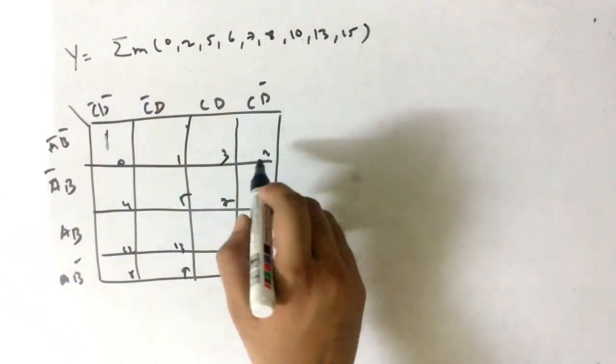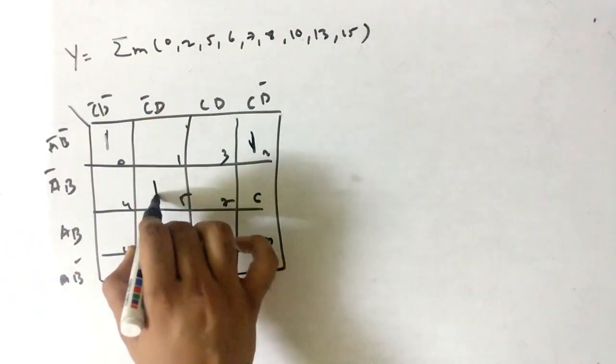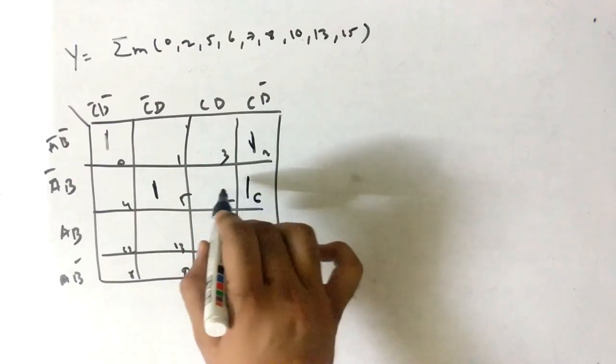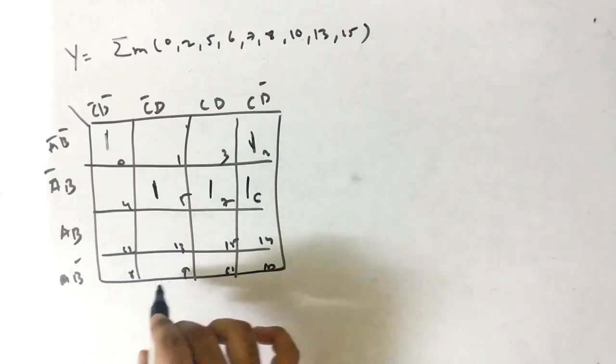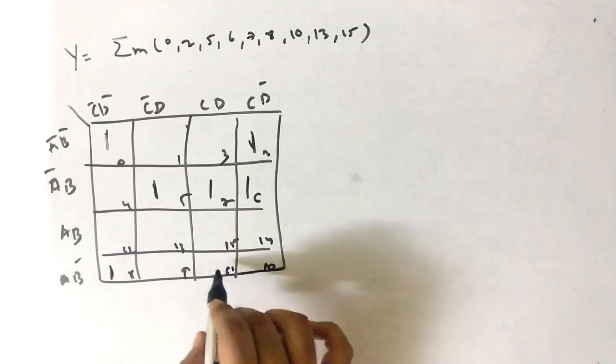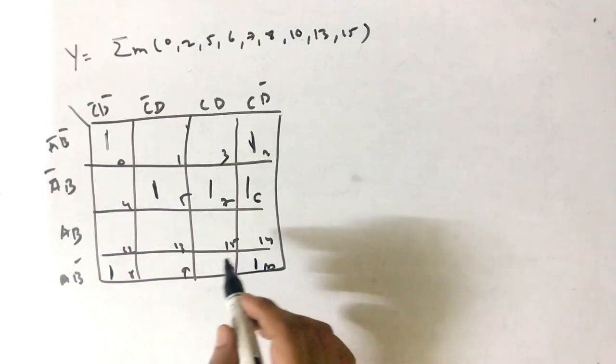Put 1 for the respective decimal. For 0 the output is high, similarly for 2 the output is high, then for 5, 6, 7, 8, 10, 13, and 15 the output is high.